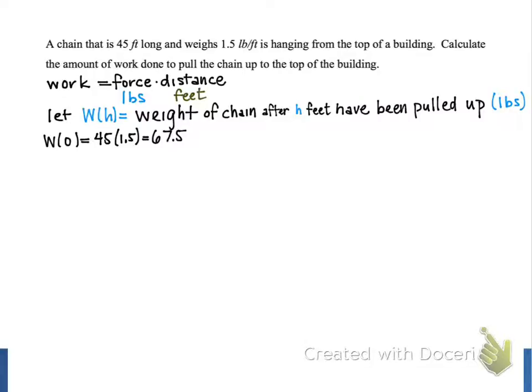The w(h) function is going to be decreasing 1.5 pounds for each foot of chain that we pull up, because that means one foot less of chain is still hanging over the side of the building. So our w(h) function will be a linear function with a constant rate of change, and that slope is going to be negative 1.5 pounds per foot, because the weight is decreasing.